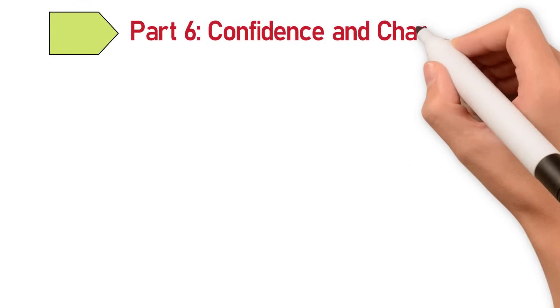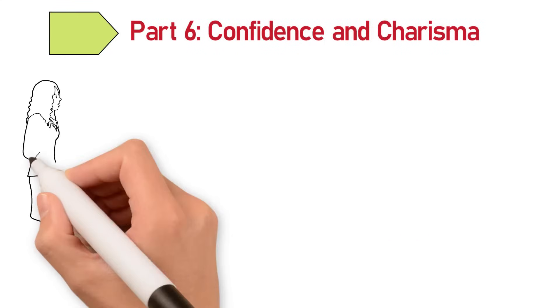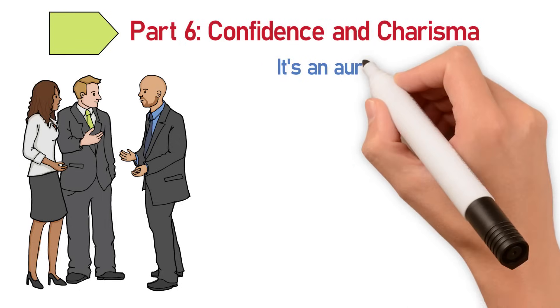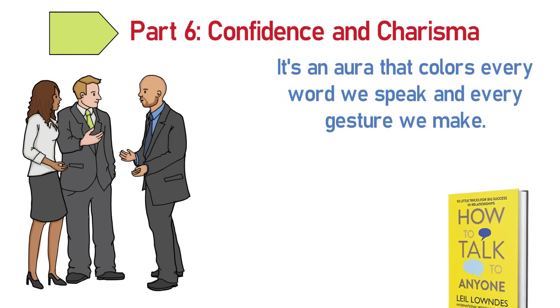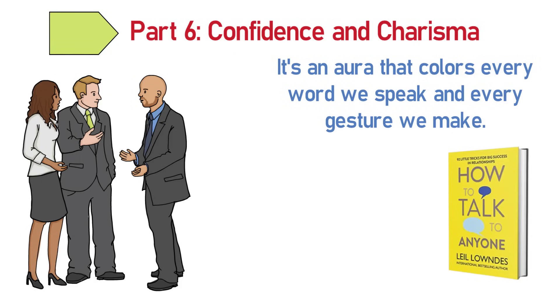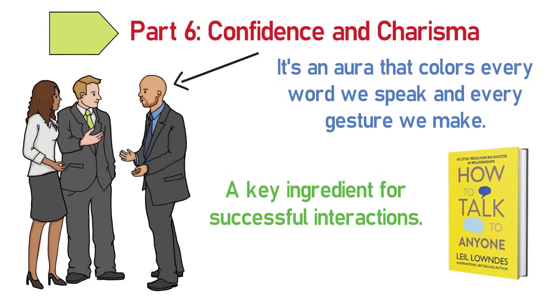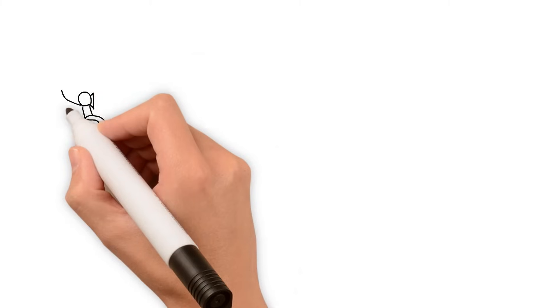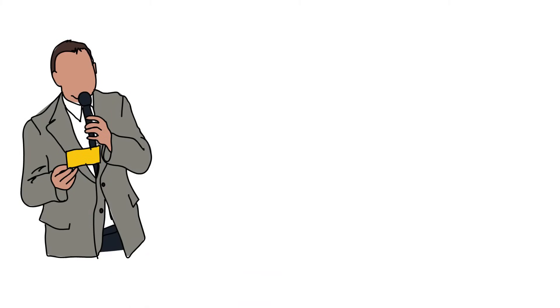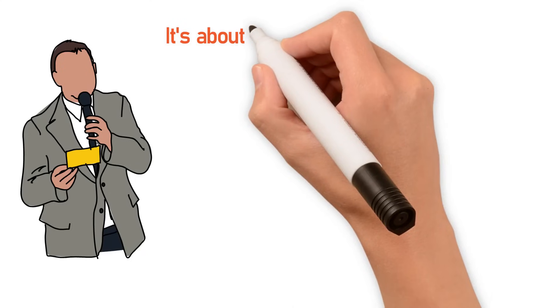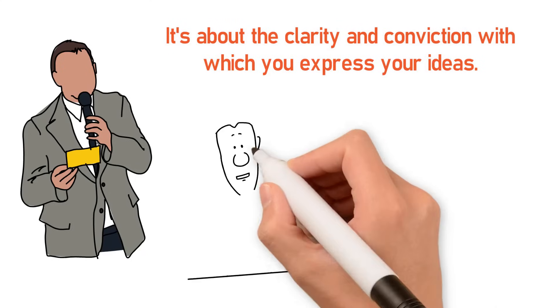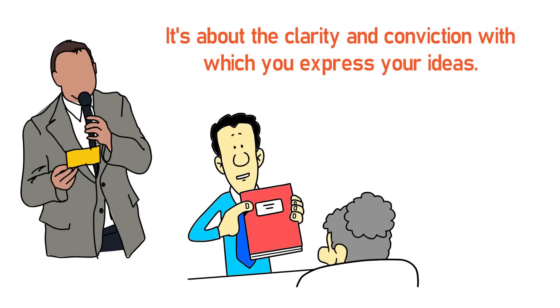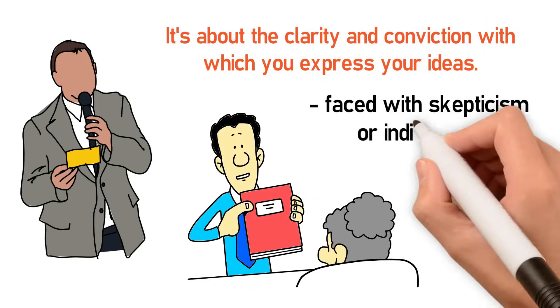Part 6: Confidence and Charisma. Confidence in communication is more than just a skill. It's an aura that colors every word we speak and every gesture we make. In How to Talk to Anyone, Leil Lowndes dives into the nuances of building this confidence, presenting it as a key ingredient for successful interactions. Confidence in communication doesn't necessarily mean being the loudest voice in the room. Rather, it's about the clarity and conviction with which you express your ideas. It's about holding on to your belief in what you're saying, even when faced with skepticism or indifference.